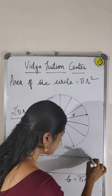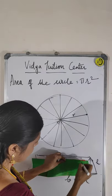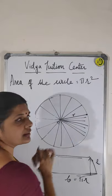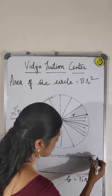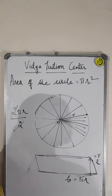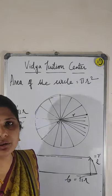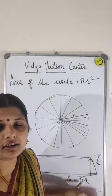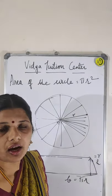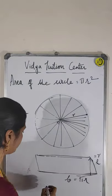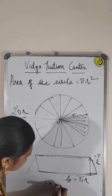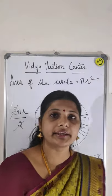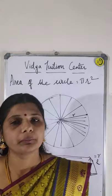So what about the height? All of it is radius — the full height is radius. So height is equal to radius. So what is the area of the parallelogram? Base into height. Base I got pi r, height I got radius r. Pi r into r is what? Pi r square. That is equal to pi r square. So the area of the circle is equal to pi r square.